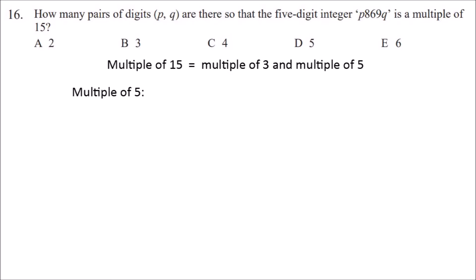To be a multiple of 5, the last digit has to either be 0 or 5. So there are two possible values for q: 0 or 5.